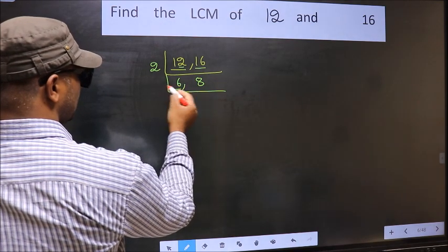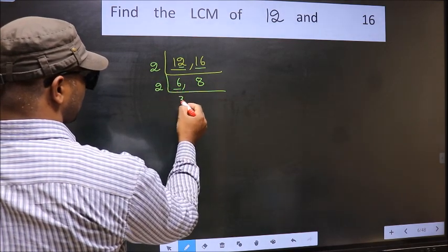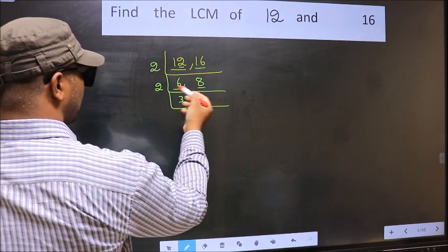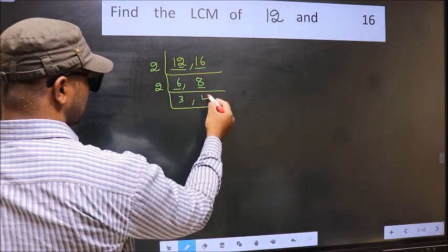Now here we have 6. 6 is 2, 3, 6. The other number 8. When do we get 8 in 2 table? 2, 4 is 8.